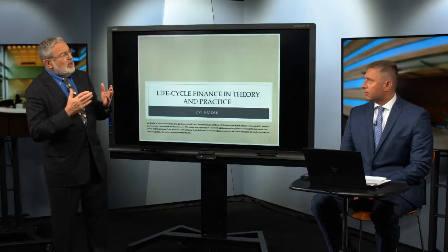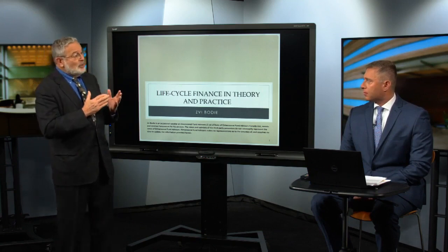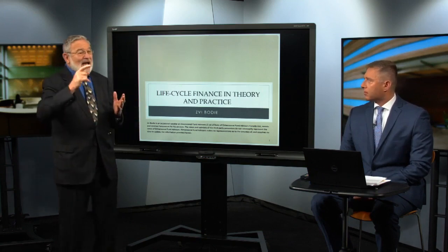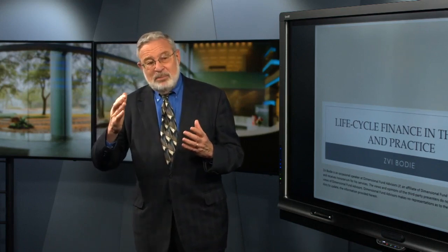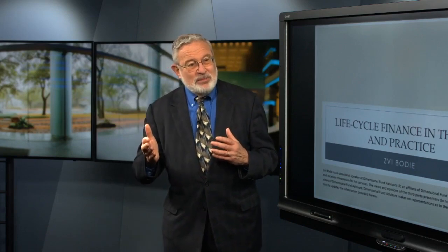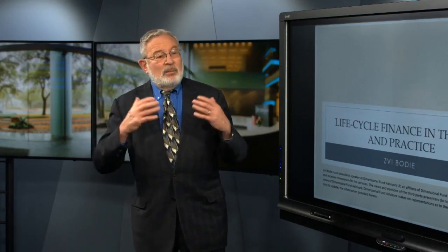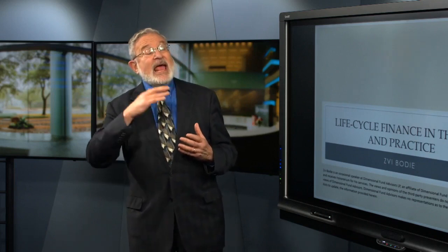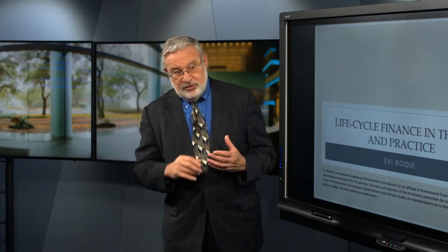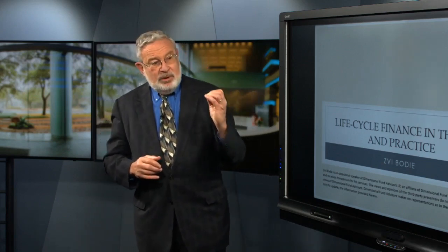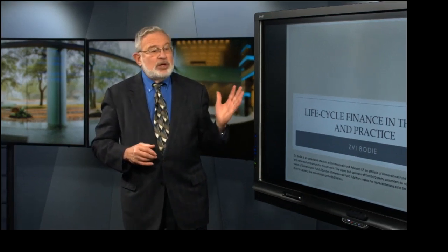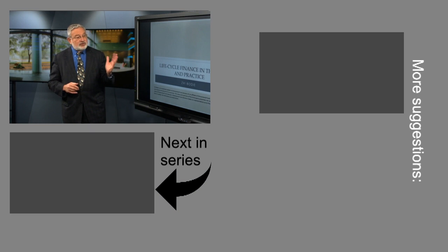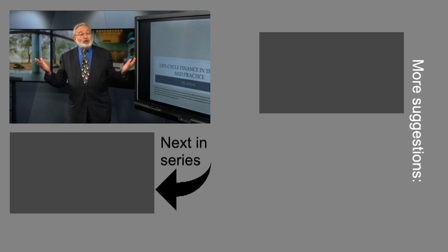It starts with a pair of papers written as part of Bob Merton's doctoral dissertation, along with his thesis advisor Paul Samuelson, back in 1969. Both papers, published in the same journal the same year, are about life cycle consumption and investment decisions — portfolio choice decisions. The element that Bob Merton brought to bear was a whole branch of mathematics never before used in economics: stochastic calculus in continuous time. He revolutionized the field.